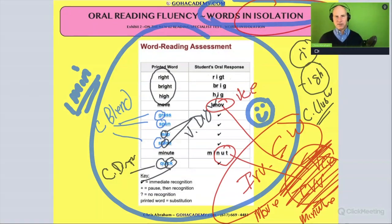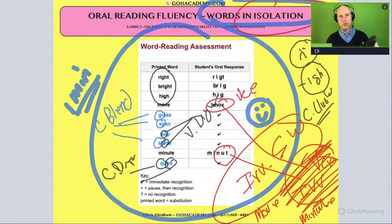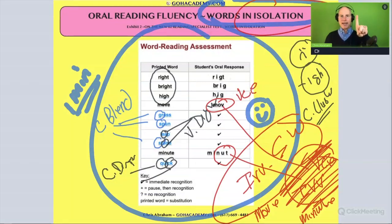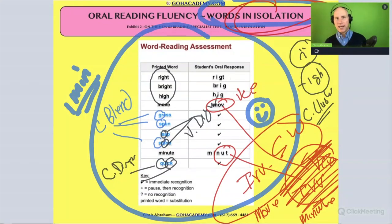In your analysis, try to take a minute and identify what the student did right, then identify what they did wrong. Try to spot at least one strength and at least one area of need. This is how we analyze reading fluency when a student reads words in isolation.